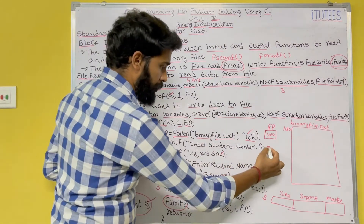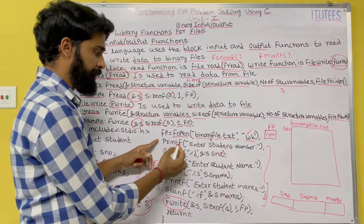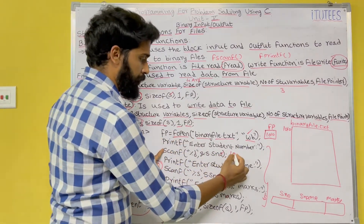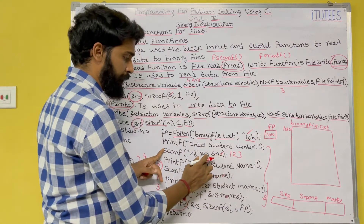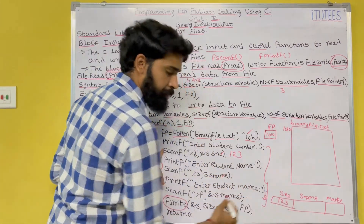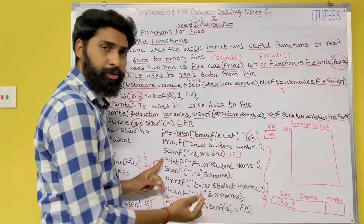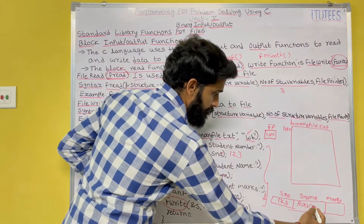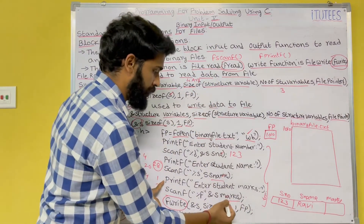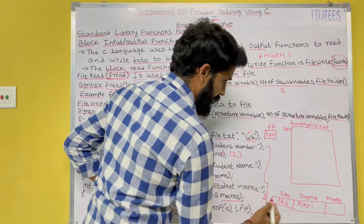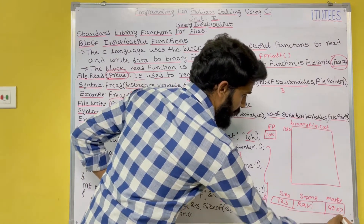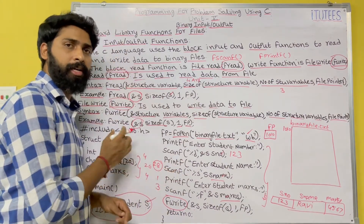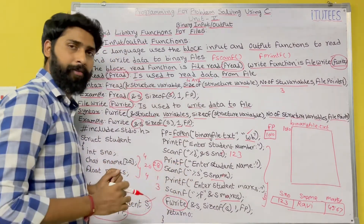I hope you all know these statements. printf "Enter student number" is displayed on the monitor; you enter, for example, 123, and 123 is stored in s.s_number. Similarly, "Enter student name" — I enter Ravi, which is stored in s.s_name. Similarly, I enter marks and that is stored in s.marks — for example, 45.67. I hope you all know how to access structure elements using the variable.